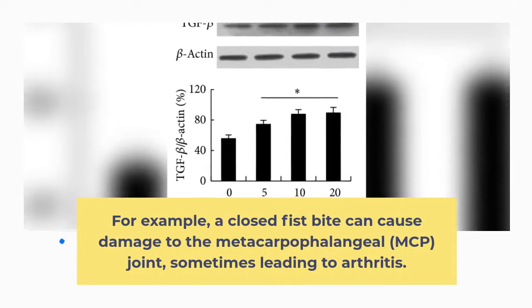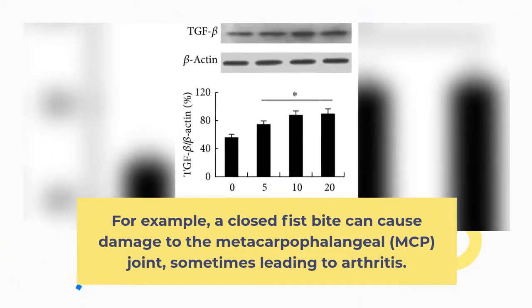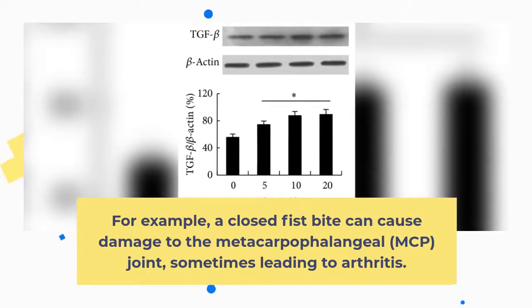For example, a closed fist bite can cause damage to the metacarpophalangeal (MCP) joint, sometimes leading to arthritis.